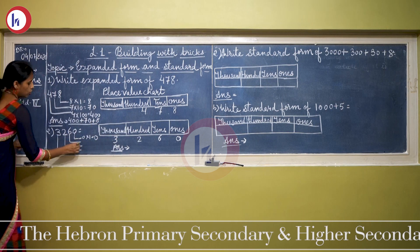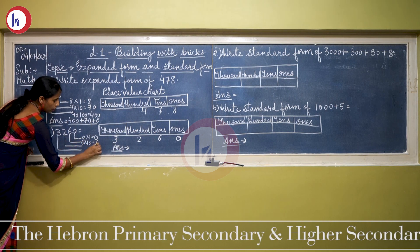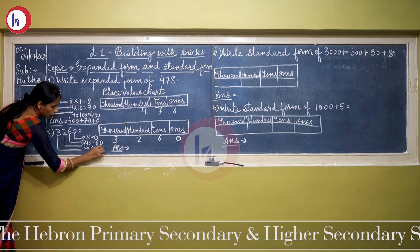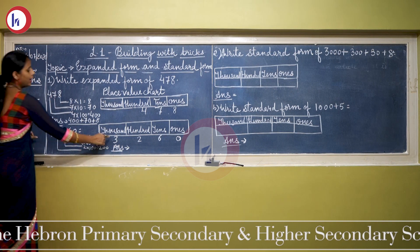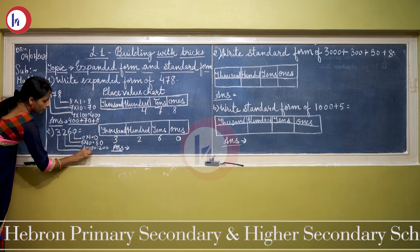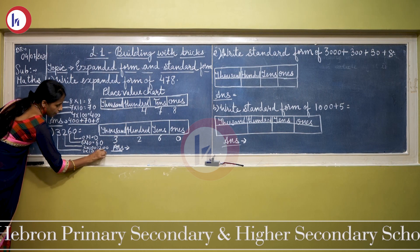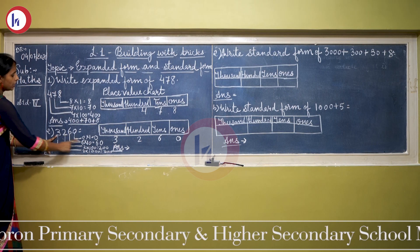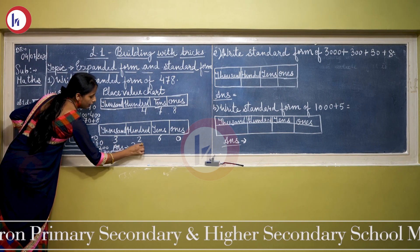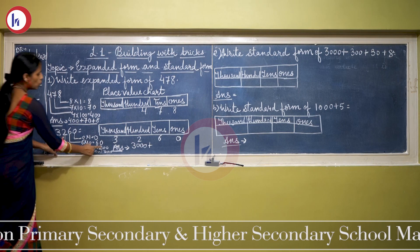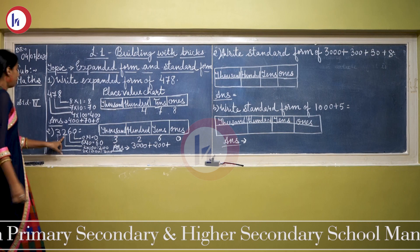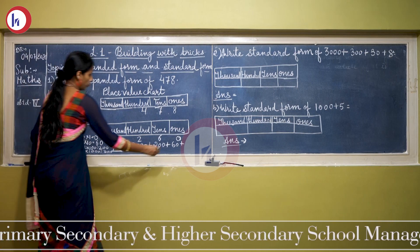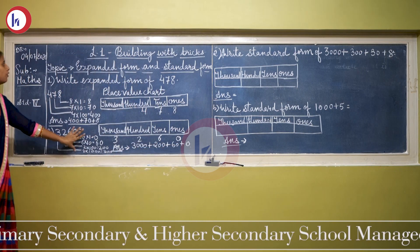6 is on the tens place, so 6 multiplied by 10 equals 60. 2 is on the hundreds place, so 2 multiplied by 100 equals 200. And 3 is on the thousands place, so 3 multiplied by 1000 equals 3000. Now we write in expanded form, starting from 3: the place value of 3 is 3000, plus 200, plus 60. The place value of 0 is 0, so the expanded form is 3000 + 200 + 60 + 0.